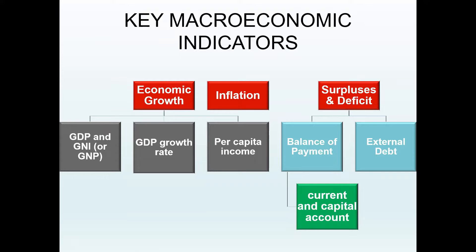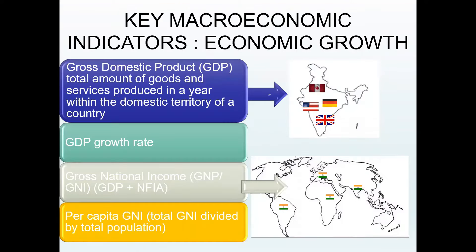These indicators depict the surplus and deficit of a country. So what is GDP, and what is the difference between GDP and GNP or GNI? GDP, or gross domestic product, is the total amount of goods and services produced in a year within the domestic territory of a country.